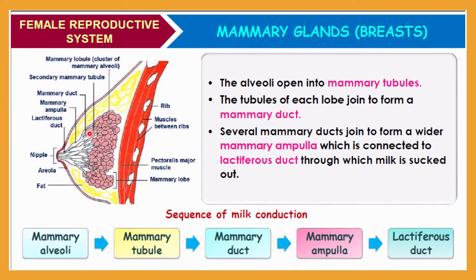Milk is secreted inside the mammary tubules. The tubules of each lobe join to form a mammary duct. All tubules join together to form the mammary duct, then several mammary ducts join to form a wider mammary ampulla. The mammary ampulla is connected to the lactiferous duct, through which milk is sucked out by the infant.